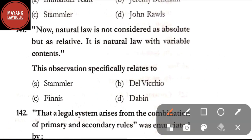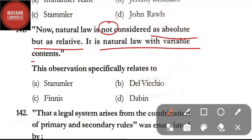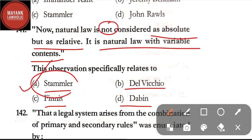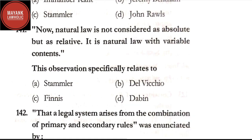Question number 140: which one of the following jurists was hostile to natural law school — option A: Emmanuel Kant; option B: Jeremy Bentham; option C: Stammler; option D: John Rawls. The correct answer is option B, Jeremy Bentham. Bentham was hostile to natural law school, whereas Emmanuel Kant, Stammler, and John Rawls were associated with natural law school.